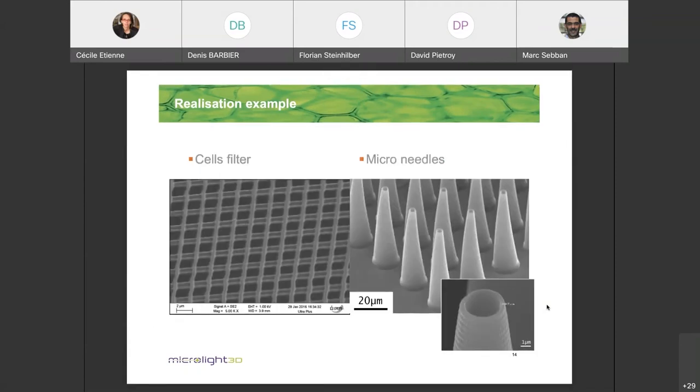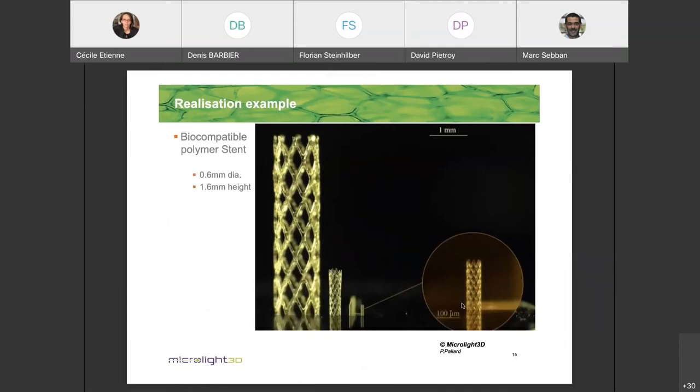Cell filters on the left hand side, as small as 2 by 2 micron for the hole. So you can separate, for example, the red blood cell from all the larger cells in the blood. Microneedles on the right hand side with very small, as small as 5 microns on the top. Knowing that human cell is around 20 microns, so it's four times smaller than the human cell.